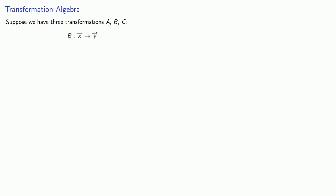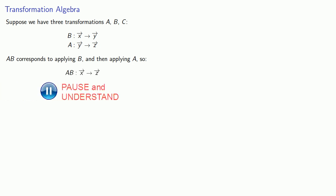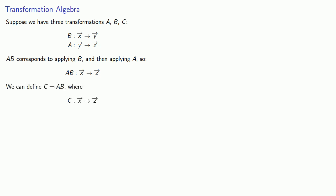b corresponds to the transformation that takes the vector x to the vector y, and a corresponds to the transformation that takes the vector y to the vector z. The product ab corresponds to applying b and then applying a, so that this product ab is going to take the vector x and send it to the vector z. And so we can define this product c = ab, where c is going to take our vector x to the vector z.